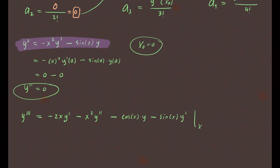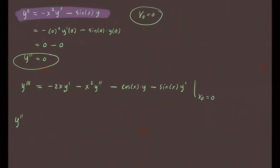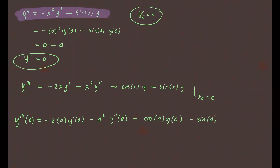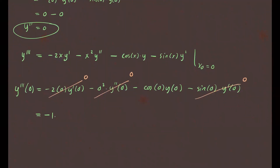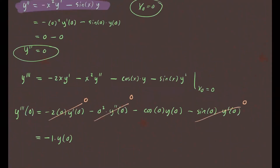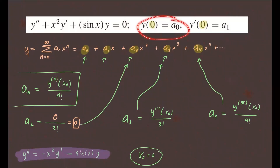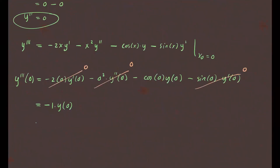Evaluating the third derivative at 0: y‴(0) equals negative 2·0·y′(0) minus 0²·y″(0) minus cos(0)·y(0) minus sin(0)·y′(0). Most terms vanish since they have a factor of 0. The only term that survives is the cosine term: cos(0) = 1, so we get negative 1 times y(0), which equals negative a₀. So the third derivative at 0 is negative a₀.